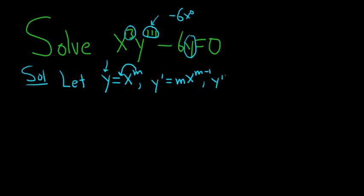Then y'' will bring down the m minus 1. Then we have mx, and then we subtract 1. So m minus 1 minus 1 is m minus 2. Then we do it again. So y''' will be m minus 2, m minus 1, mx to the m minus 3.